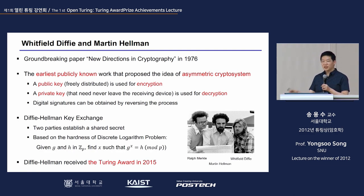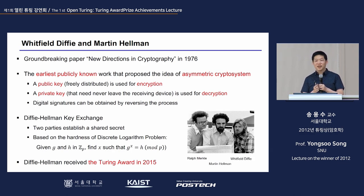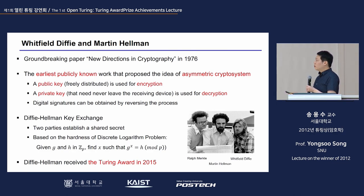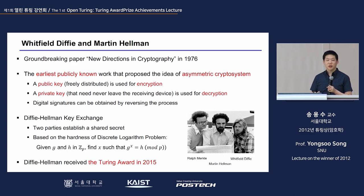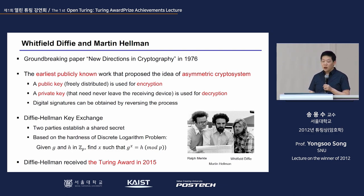Merkle was very disappointed and went to another university, where he met Diffie and Hellman. He was very lucky to have met these two professors because they saw the value of his work. They used more formal language to write a better paper sharing that knowledge, and wrote the groundbreaking paper 'New Directions in Cryptography' in 1976, published soon after they met Merkle.